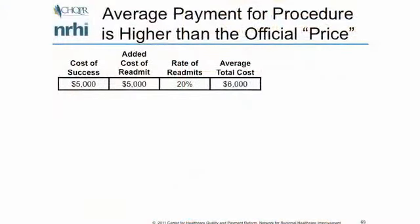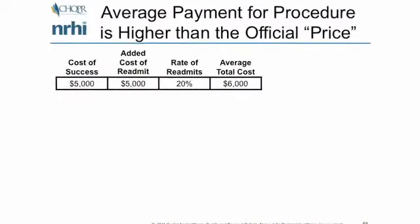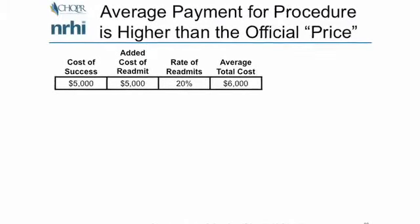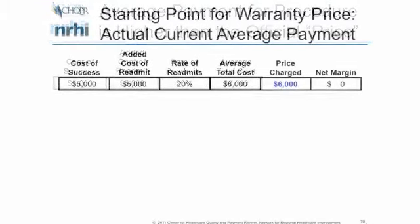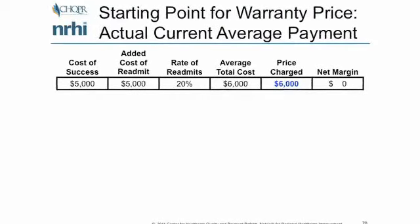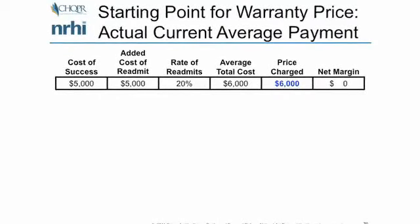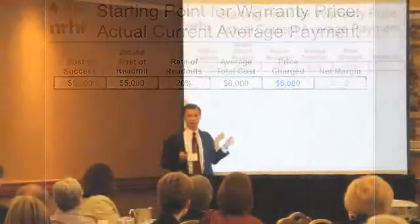Now, if you were this hospital or provider or health system and you wanted to offer a warranty — saying you're not going to charge for readmissions for this particular procedure — how much would you charge? Well, the answer is you'd charge $6,000. Because if you charge $6,000 and don't charge more for readmissions, you're basically making the same amount of money as before.